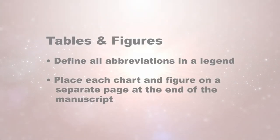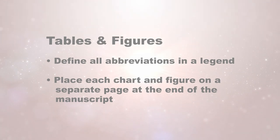Most journal author guidelines ask you to place each table or chart and each figure on a separate page at the end of the manuscript, usually double-spaced. Do not embed your tables and figures within the paper. Carefully read your author guidelines, but most are going to tell you each table and each figure goes on a separate page at the end of the manuscript.